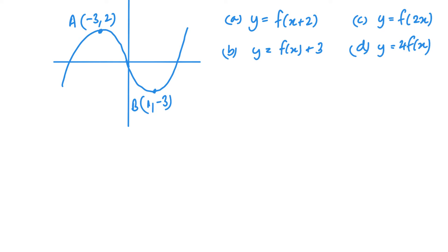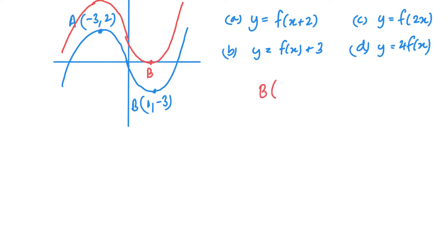Now part b: f of x plus 3. The plus 3 is outside of f of x, so it's affecting the y values — it's vertical. It's an addition, so we're looking at a translation, and you go in the direction you'd expect, so we are moving up 3. Point b is now hitting at (0, something) and point a is still at the same x but the y is now up to 5 — we've just added 3 to each of my y values.